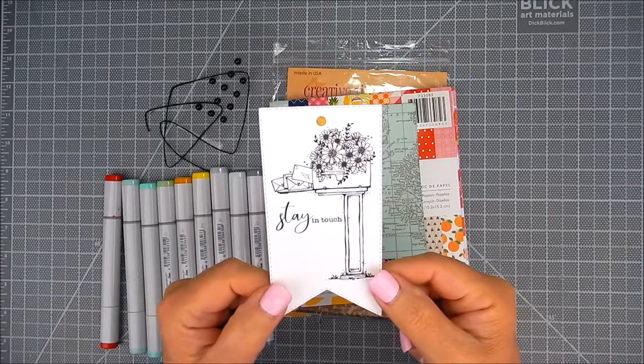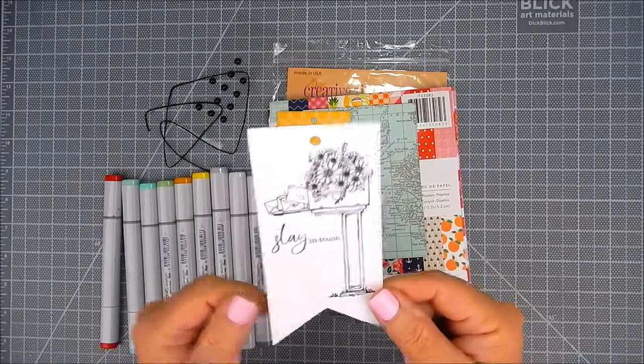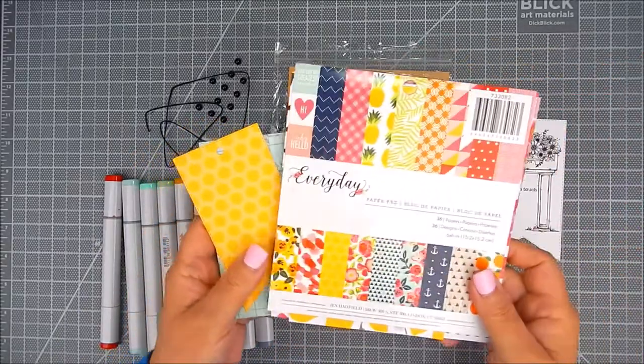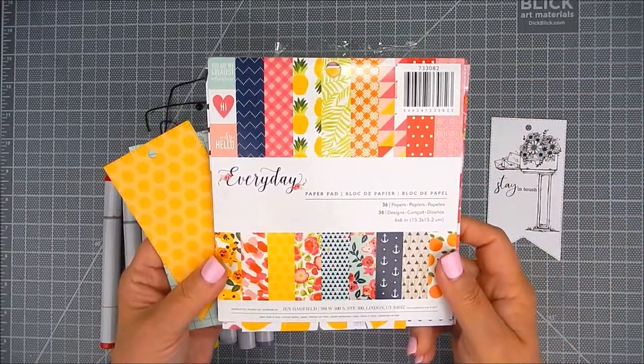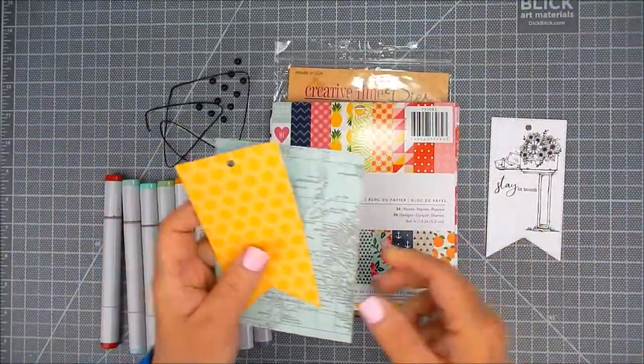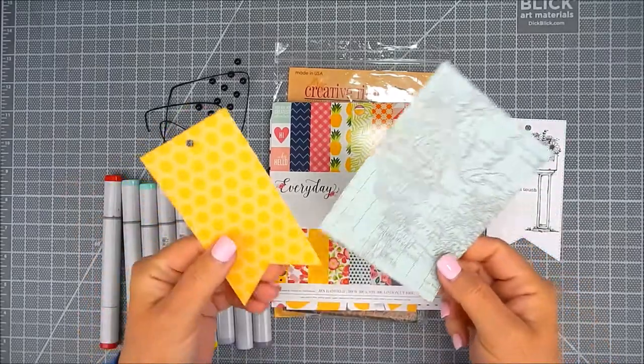It's really sweet. It has a mailbox with flowers on top. And I'm using patterned paper by Jen Hadfield. It's a single-sided six by six paper pad called Every Day. And I am using green and yellow hues.